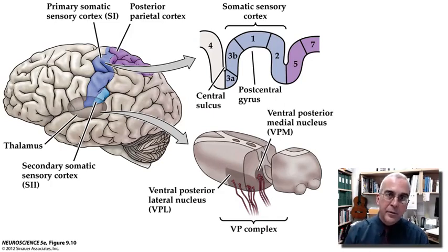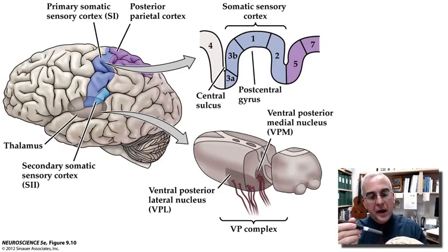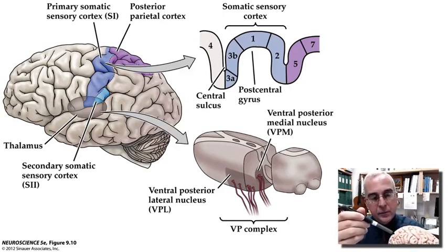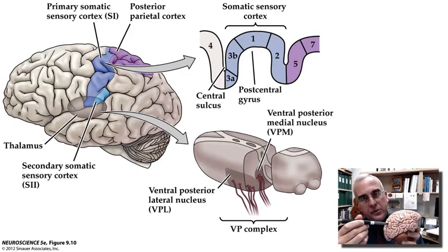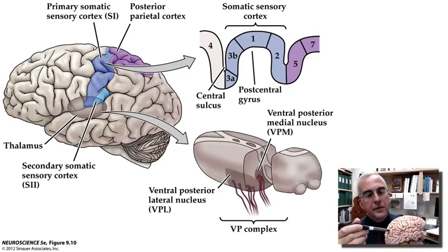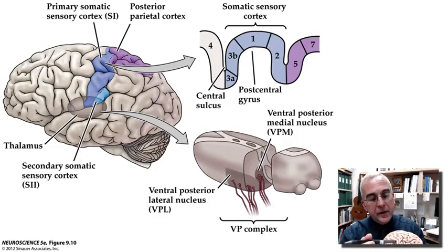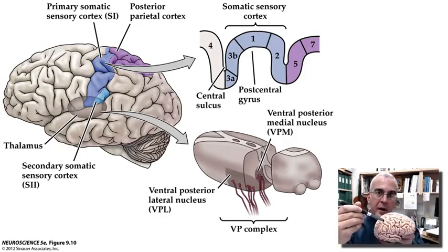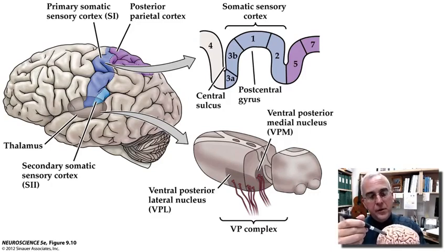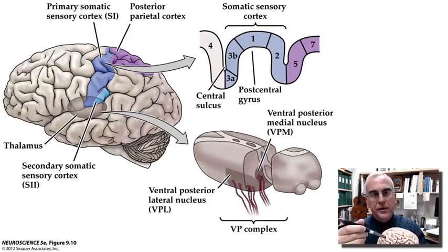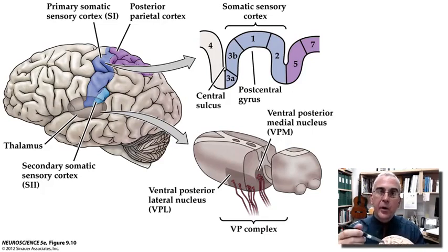Those nuclei relate to a particular part of the cerebral cortex. If we were to look at the cerebral cortex, we could identify just about any region and ask what is the thalamic nucleus that projects to this region. If we focus on the postcentral gyrus — our primary somatic sensory cortex — there's a particular part of the thalamus that maintains interconnections with it and receives ascending information about mechanosensation. That part is what we call the somatic sensory thalamus.